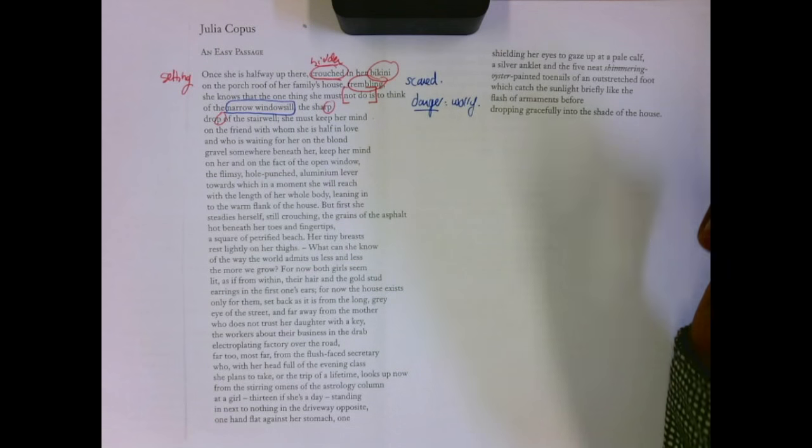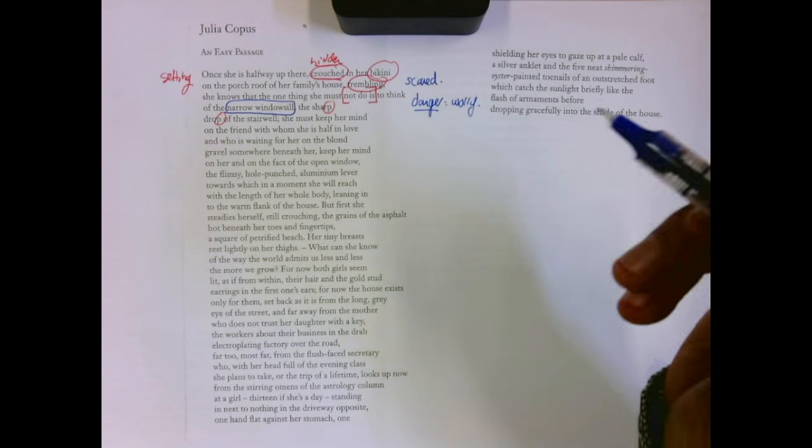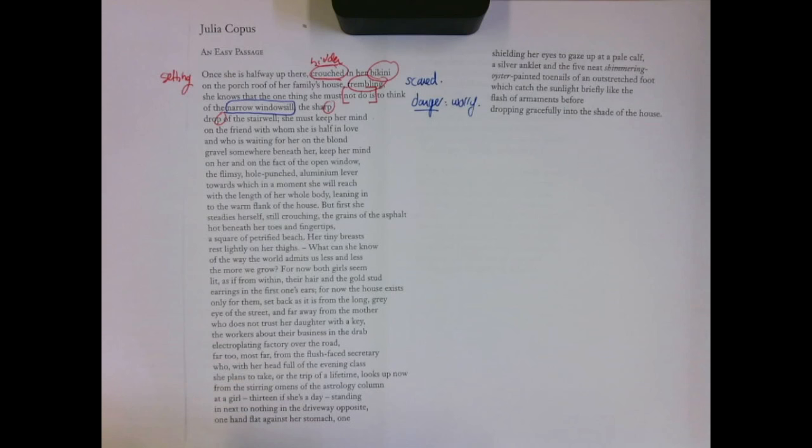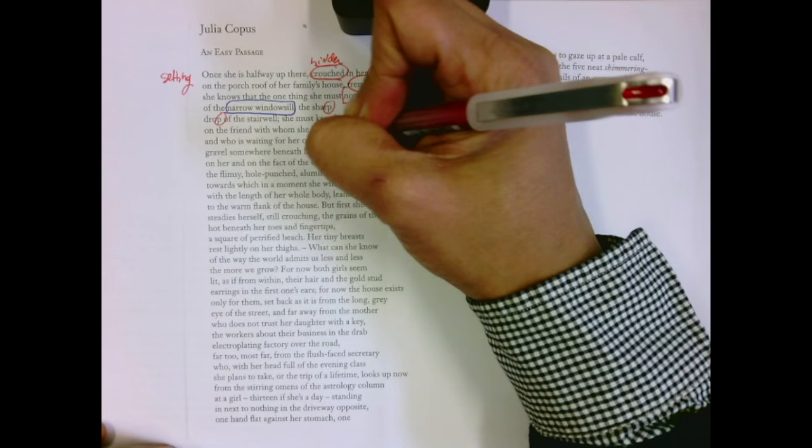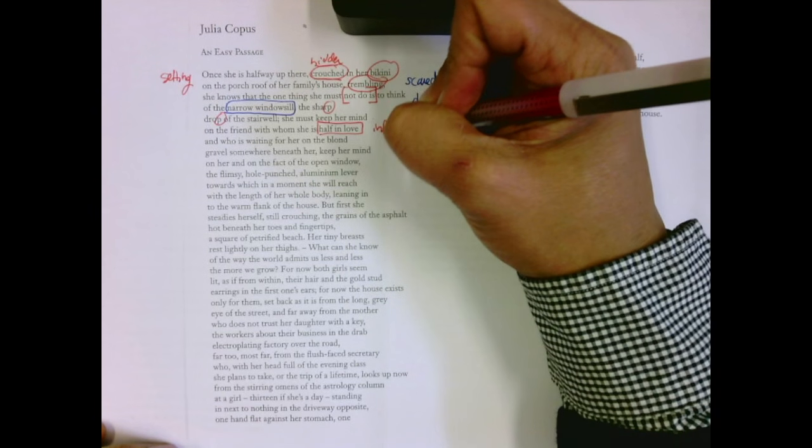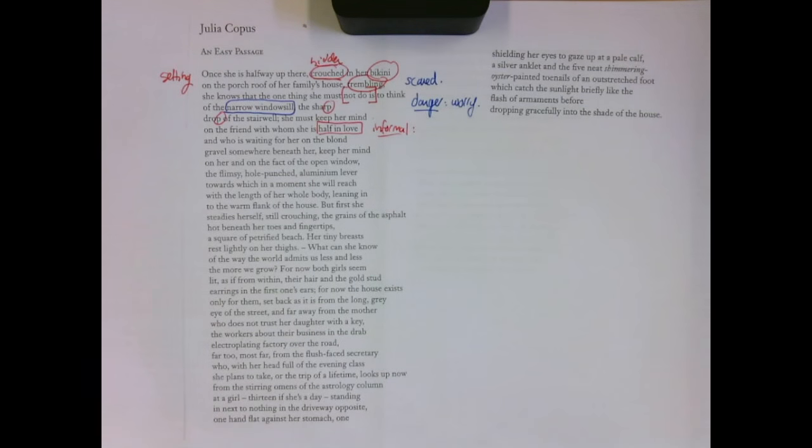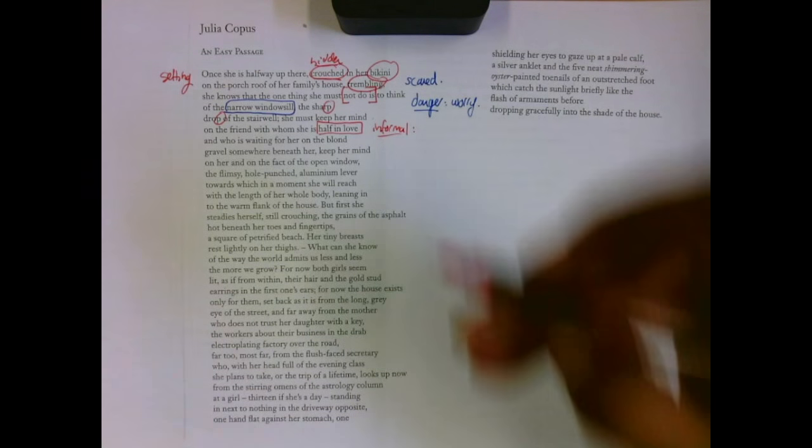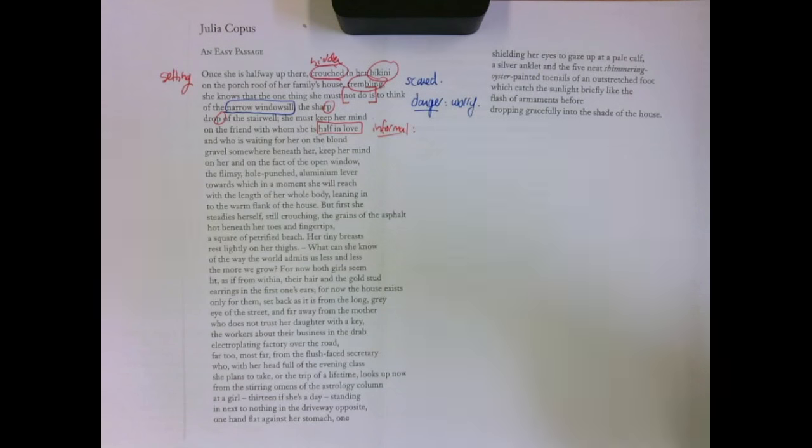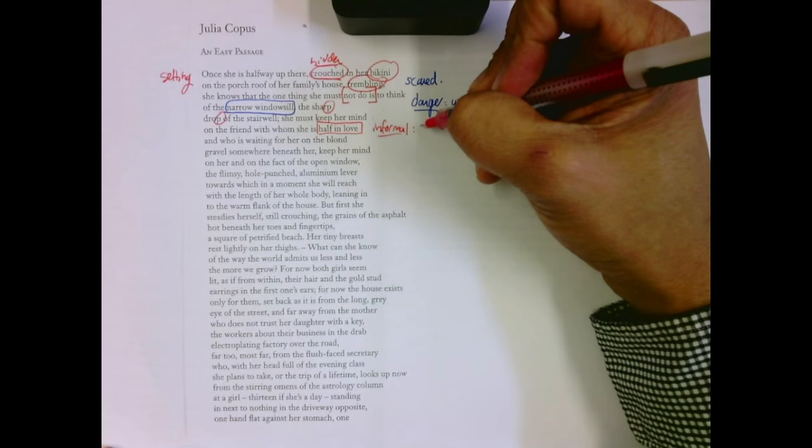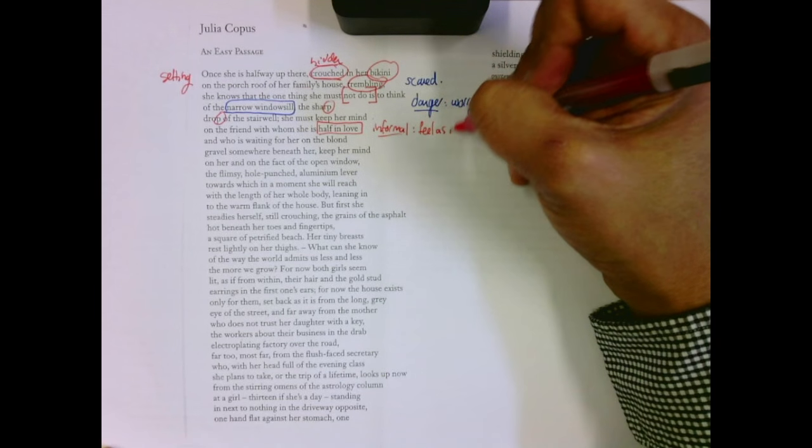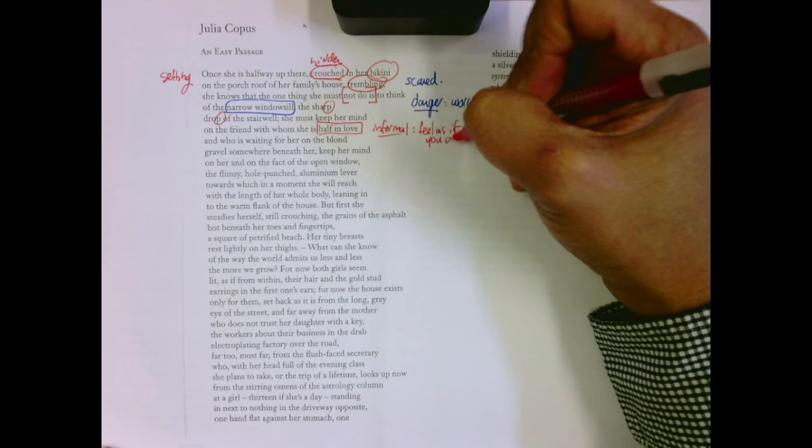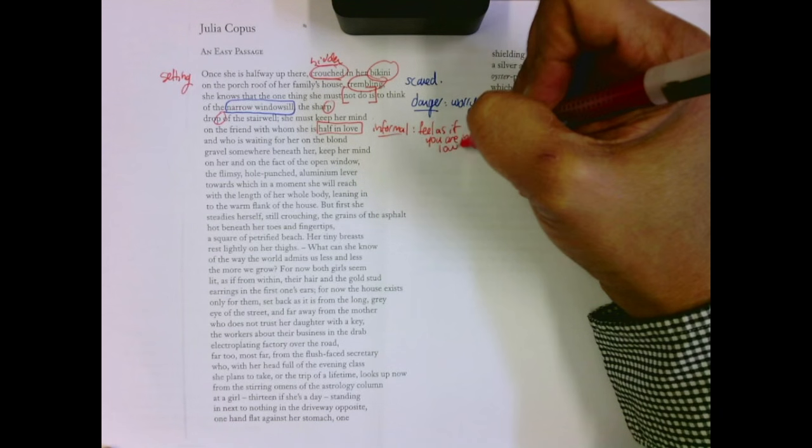She must keep her mind on the friend with whom she is half in love and who is waiting for her on the blonde gravel somewhere beneath her. Oh, that's so nice. I think for me, it's half in love. It's informal. I've had students who think this is a love affair or something. I think it's when you're a young person and you reflect back on your friendships, you feel as if you're in love. And that's why we get the half there.